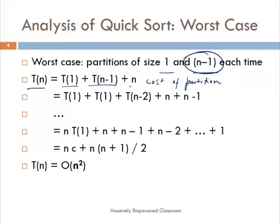The cost of partitioning is of n comparisons — there can only be n comparisons made when partition is called for n elements. Therefore we count that in the recurrence relation: T(n) = T(1) + T(n-1) + n.